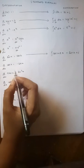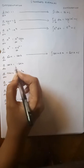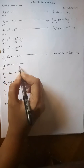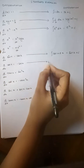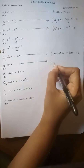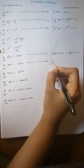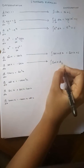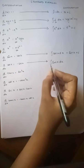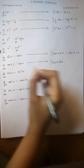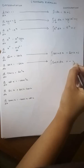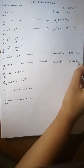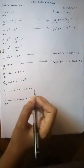Now, differentiation of cos x with respect to x gives us minus sin x. So integration of sin x: since I have just taken sin x, my negative sin x is carried in my answer over here and I get minus cos x plus c.